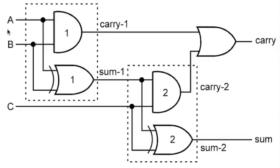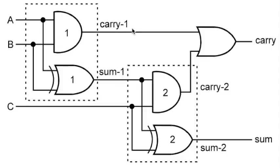Logically analyzing the circuit, if all three inputs are zero, zero, zero, then the output sum will be zero plus zero plus zero equals zero, with carry zero. To analyze other cases, it helps to find the output equations of each output in the circuit. For carry one, it is the output of AND gate one, which has two inputs A and B, so its output equation is carry one = A · B.